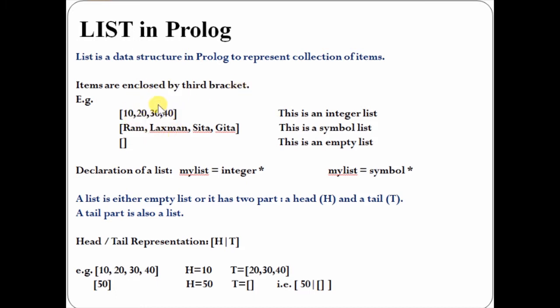Here I'm showing you some examples of lists. This is an integer list. All the items are separated by commas. This is a symbol list, also separated by commas. This is an empty list, meaning no items within the third brackets.